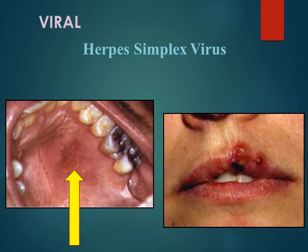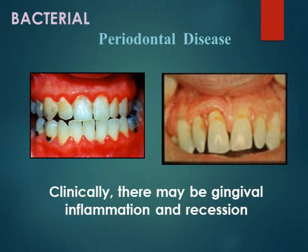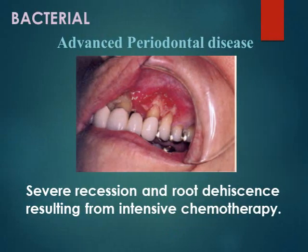Viral infection, like herpes simplex virus, also occurs. Periodontal disease, which is a form of bacterial infection, is also possible, with gingival inflammation and recession. With intensive doses of chemotherapy, there may be advanced periodontal disease with complete root dehiscence.